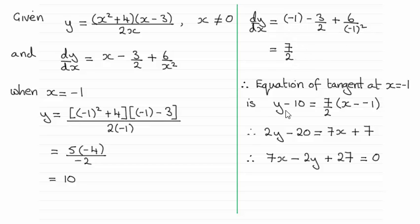So we can plug this into our form of the equation of a line, y minus y1 then, y minus 10, equals the gradient 7 over 2 times x minus x1, x1 being minus 1.